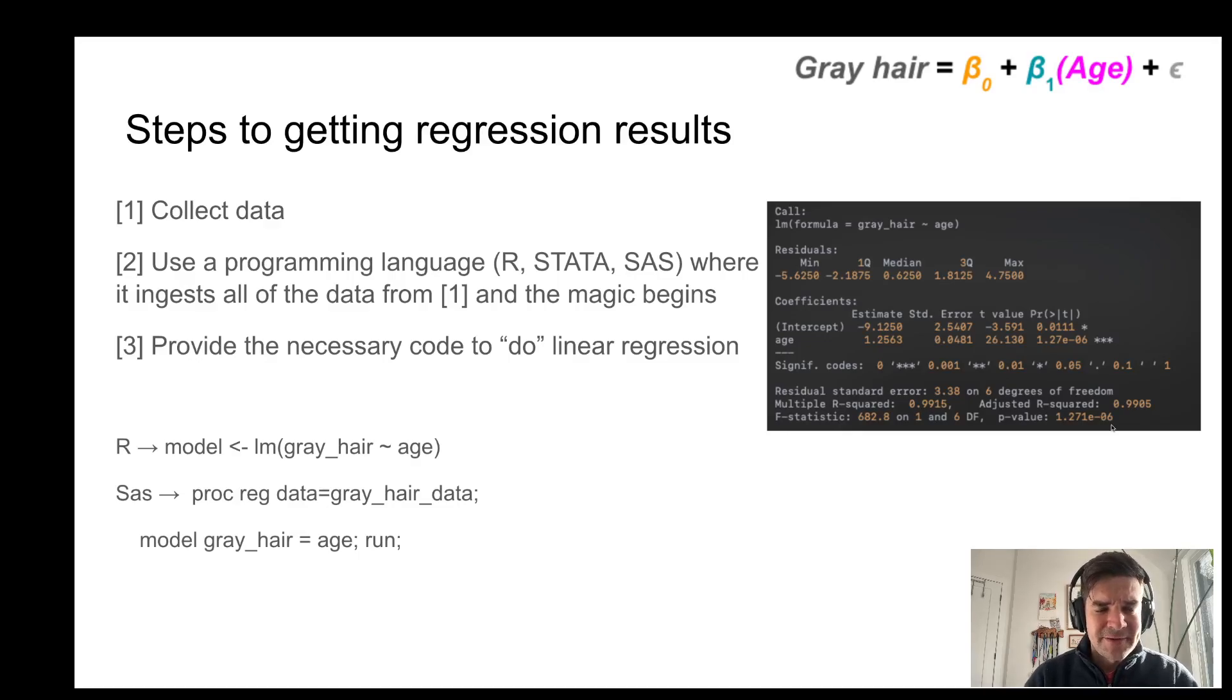And this is the output you would get from R, for example. So here we see what our intercept term is, as well as our slope for age. So let's write this out in bigger letters so it's a bit more clear. So this is the formula that it gives us.